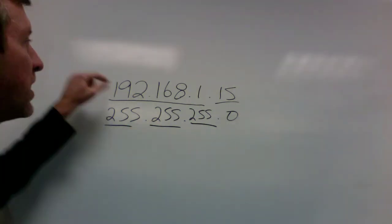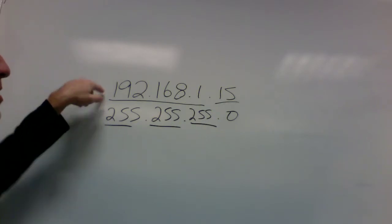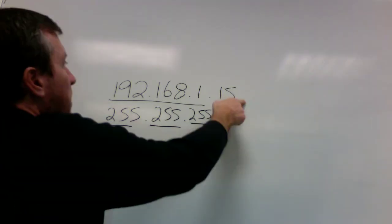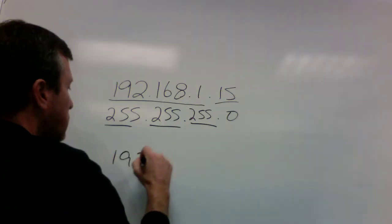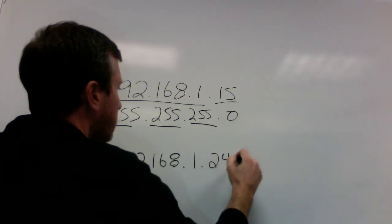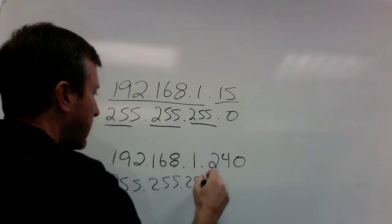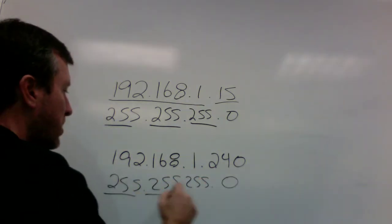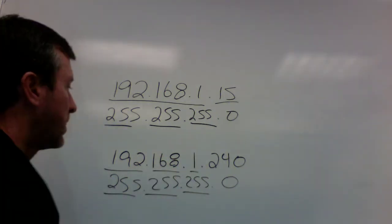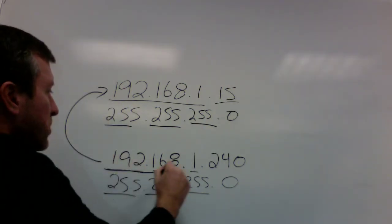So essentially how this works is, starting with the very basics here, the 255s basically mask off the portion of the IP address that relate to the network versus the portion of the IP address that relate to the host. So here I can say my first three octets are 255, so I know that 192.168.1 defines my network, and then .15 defines my host.